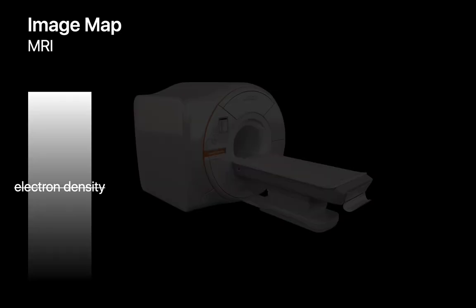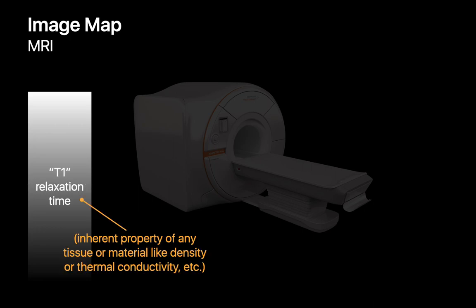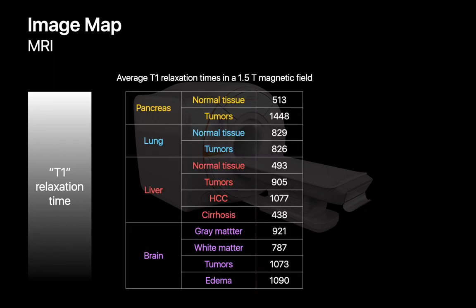While MRI machines might not be able to create an electron density map of the body, they can create T1 relaxation time maps. T1 relaxation time is an inherent property of matter, just like density or thermoconductivity, and it varies in different tissues. For example, the T1 relaxation time in normal liver tissue might be around 500 milliseconds, while the T1 relaxation time of liver tumors may be around 900 to 1000 milliseconds.